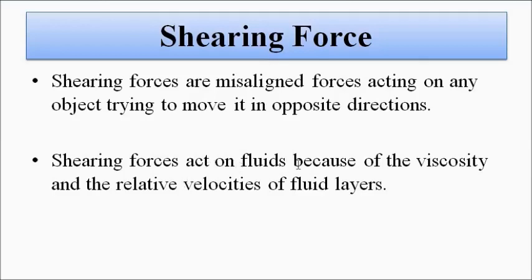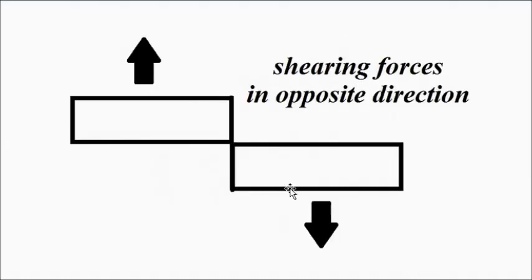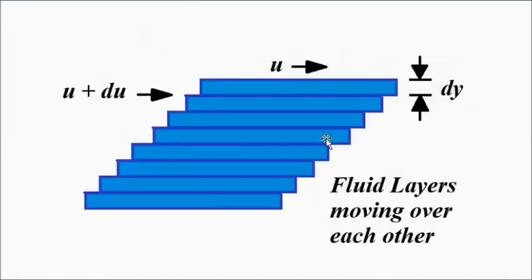Shearing forces act on fluid layers because of the viscosity and the relative velocities between the layers, and they try to move the fluid layers in opposite directions. You can visualize it like this: one group of shearing forces tries to move the object in one direction, while the other group tries to move it in the opposite direction. They act in opposite directions because they are misaligned. Because of the interaction of the fluid layers and the relative velocities between them, shearing force causes shearing stress.